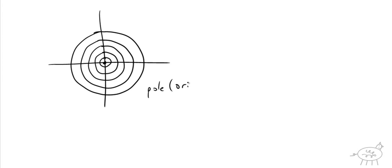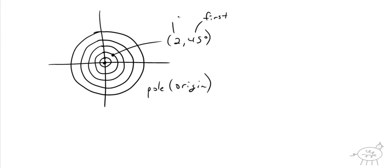The pole is like the origin of an X, Y axis. Let's plot a few points. If I put a point right here, this point is 2 comma 45 degrees. When you're identifying or plotting a coordinate, you want to do the angle first and then the radius second — very important. So if I say let's plot 3 comma 270 degrees, you go to 270 degrees, which is straight down, and then go out 3. That is 3 comma 270.